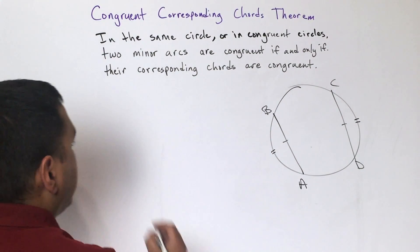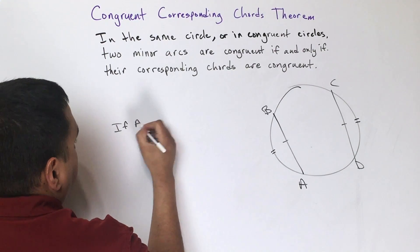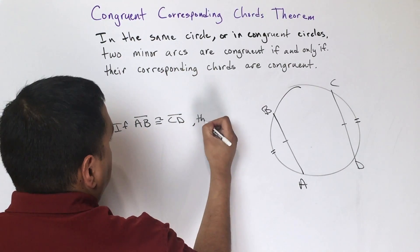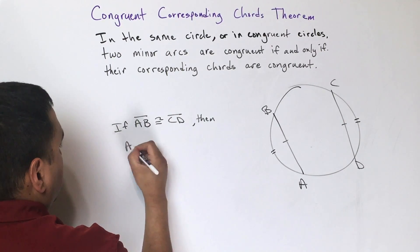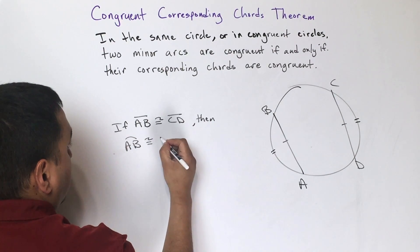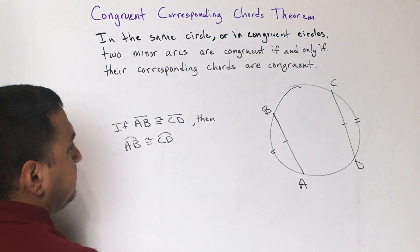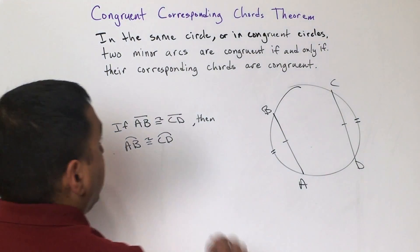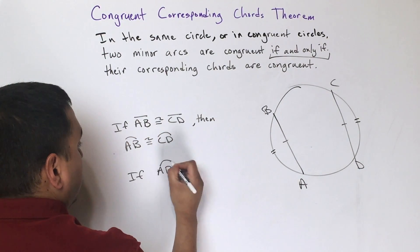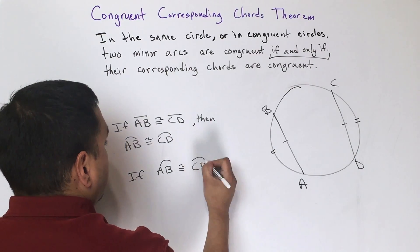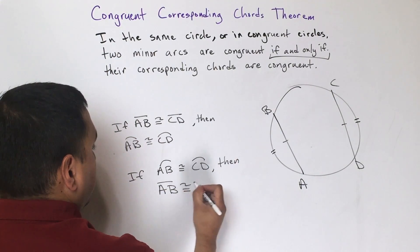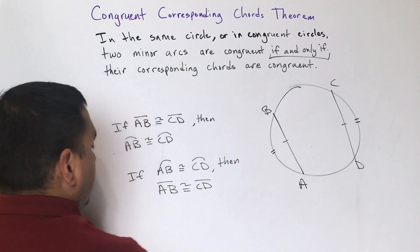We can put this in a conditional statement: if segment AB is congruent to segment CD, then arc AB is congruent to arc CD. This also works backwards because of the 'if and only if' — if arc AB is congruent to arc CD, then chord AB is congruent to chord CD.